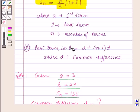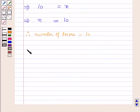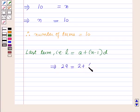Now using this formula which is given as a key idea, we have the last term L = A + (n-1)D. Now putting the values of L, A, and n here, this implies 29 = 2 + (10-1)D. Further, this implies 29 - 2 = 9D.